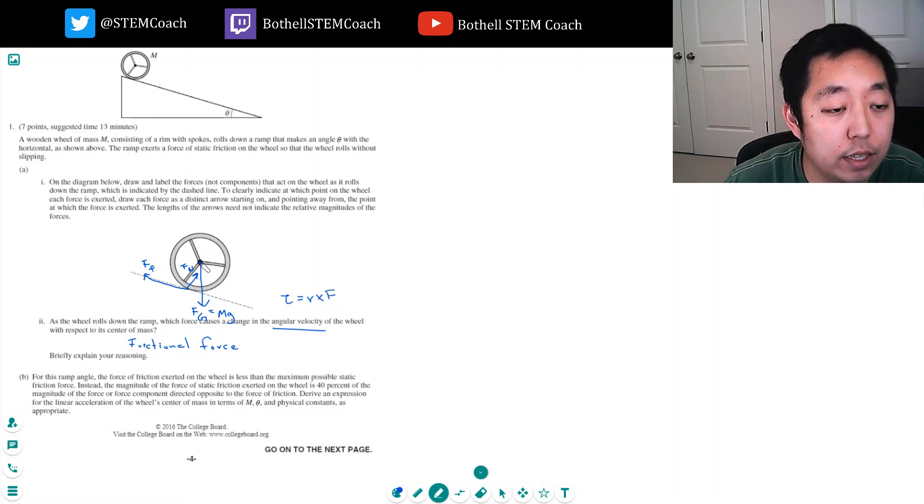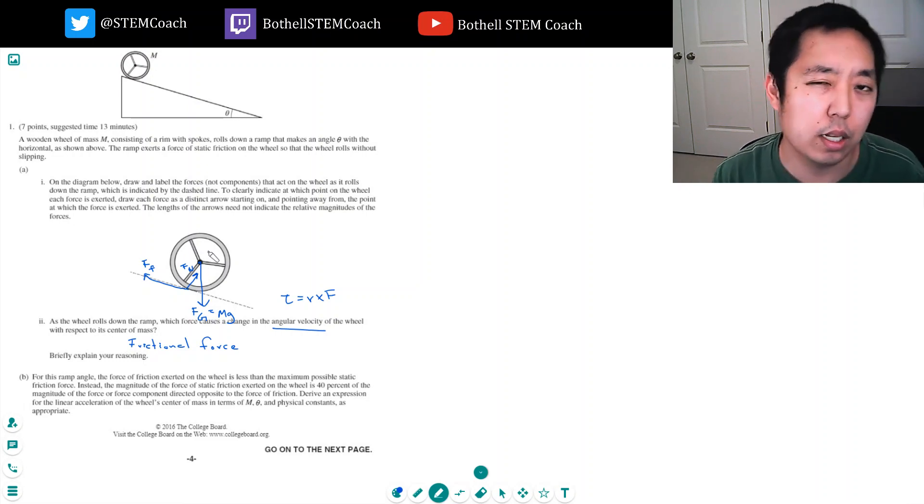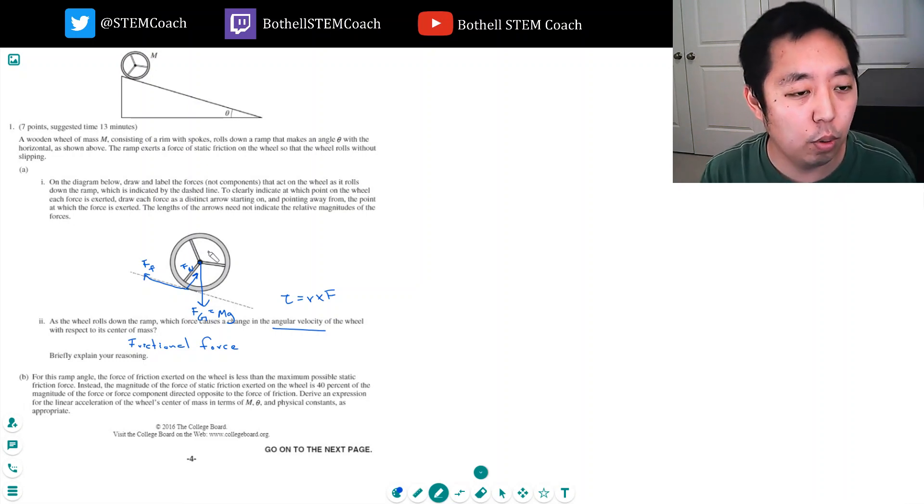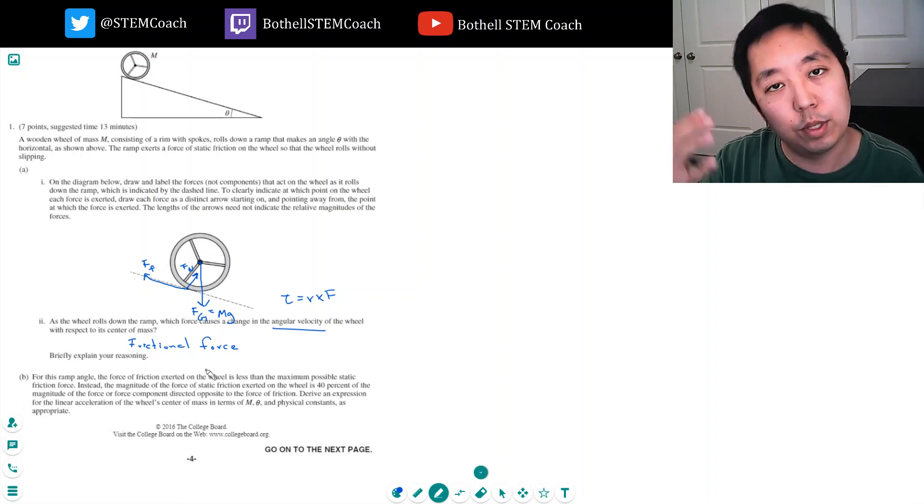Now gravity is acting at the center. That doesn't, torque is what causes something to rotate, right? The torque has to be non-zero for it to be. Gravity doesn't cause something to rotate, because it acts at the center of mass, so r is zero.